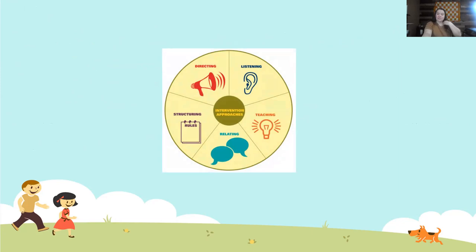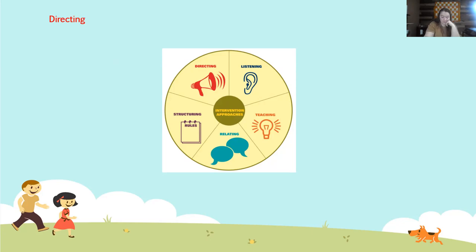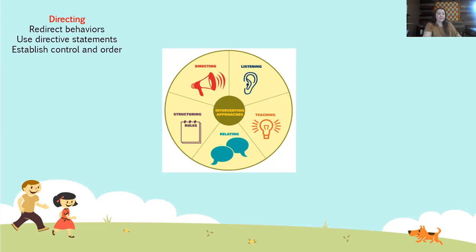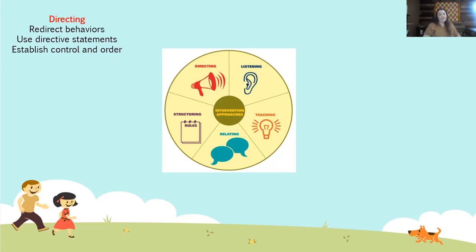We are going to finish this part of the training by talking about intervention approaches. There are five different intervention approaches: listening, teaching, relating, structuring, and directing. The first one is the directing approach — redirect behaviors, use directive statements, establish control and order. We use this approach when we want to direct the child's behavior; it's extremely useful when the behavior could be dangerous. For example, if little Johnny is chasing after a ball that went into the middle of the street, a directing statement could be: 'Come here and let me get the ball' — telling the child not to go into the street so you can get the ball because it's unsafe.